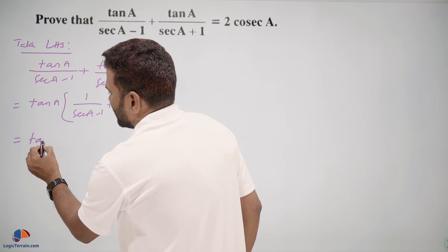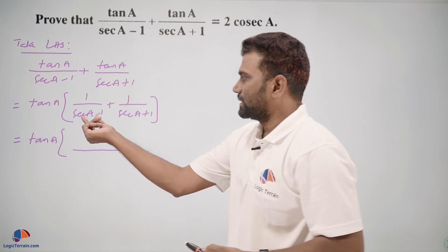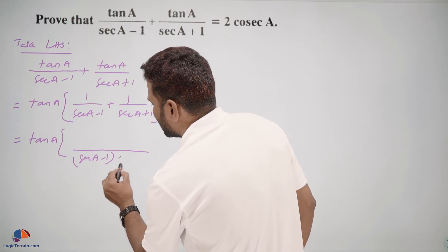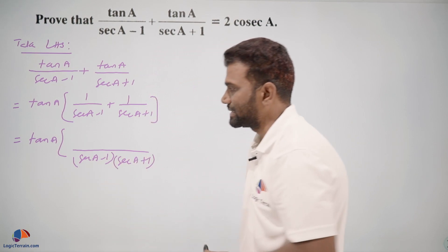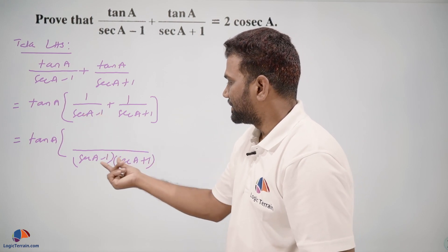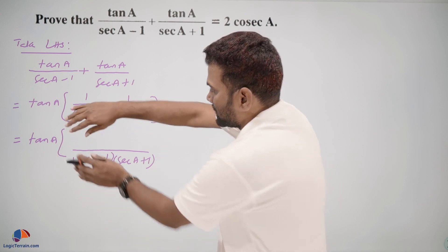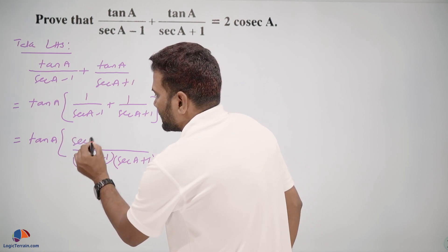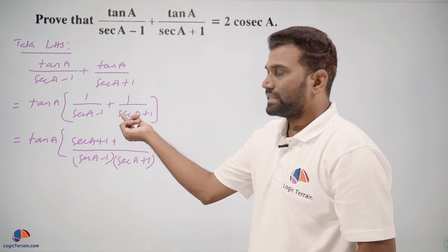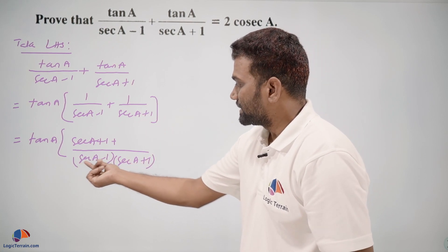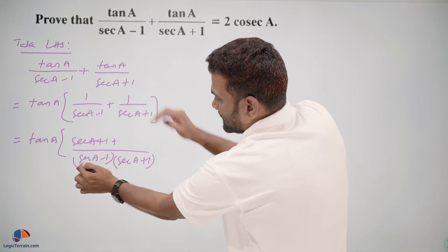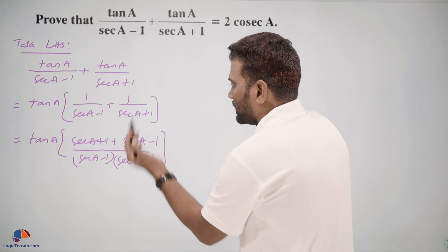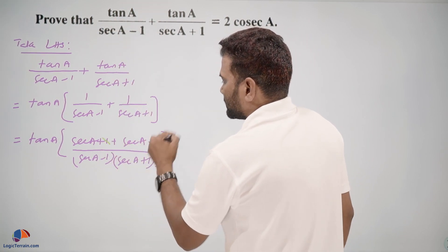To add these two terms, we take the LCM. There is no common factor, so we multiply both denominators: LCM is (secant A minus 1)(secant A plus 1). The first denominator divides the LCM giving secant A plus 1, and the second denominator divides the LCM giving secant A minus 1. So numerator becomes: secant A plus 1 plus secant A minus 1.